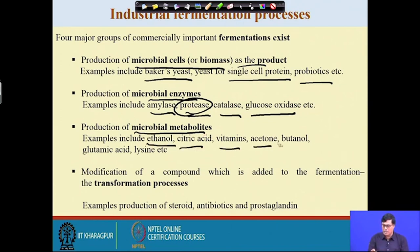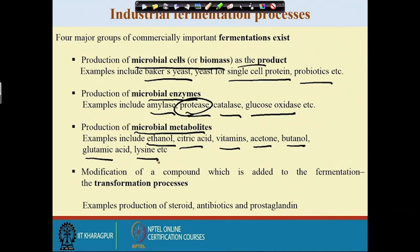Third, microbial metabolites including ethanol, citric acid, vitamins, acetone, butanol, glutamic acid, and lysine. Most chemicals we require in daily life can be produced through biological means, but in practice the concentration of biochemicals in the fermentation broth is very small, making the recovery cost very high and uncompetitive with chemical processes. Research aims to increase the concentration of biochemicals to reduce recovery costs and compete with chemical synthesis.